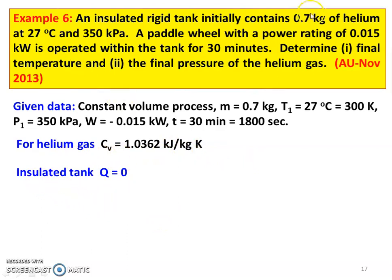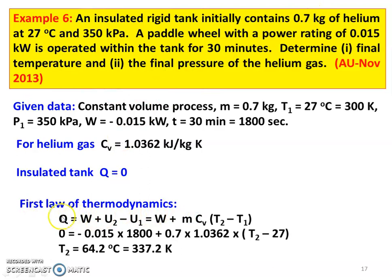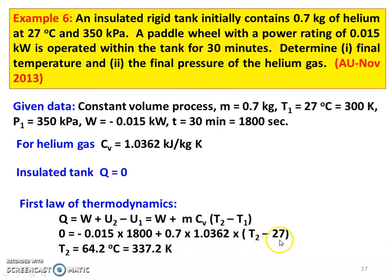Since the tank is insulated, there is no heat transfer. Applying the first law of thermodynamics: Q equal to W plus (U2 minus U1), and U2 minus U1 equal to M·Cv into (T2 minus T1). With Q equal to 0: 0 equal to W plus M·Cv·(T2 minus T1). Substituting: 0 equal to minus 0.015 kilowatt into 1800 seconds plus 0.7 into 1.0362 into (T2 minus 27). Solving, T2 equal to 64.2 degrees Celsius, which is 337.2 Kelvin.